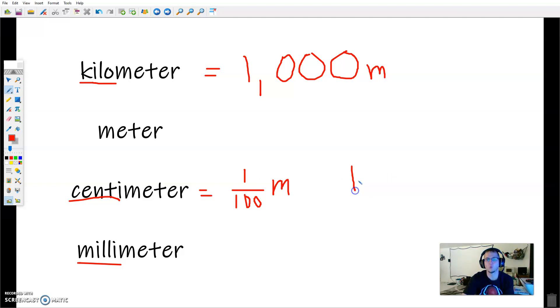Or another way we could say that is 1 meter equals 100 centimeters. And then our other one here, milli. If you think about like a millipede, a millipede is thought to have a thousand legs. That milli means a thousandth. So a millimeter is 1/1000th of a meter. Or another way we could say that is 1 meter equals 1,000 millimeters.